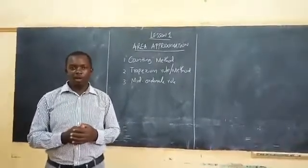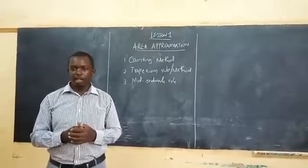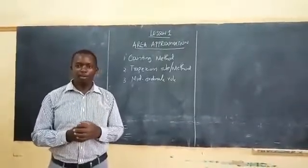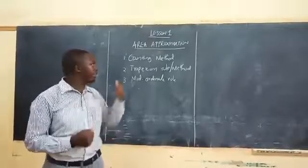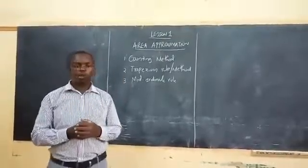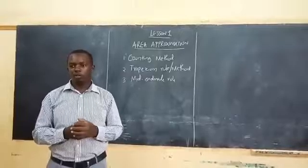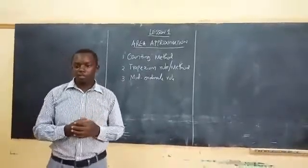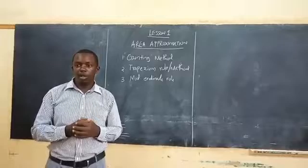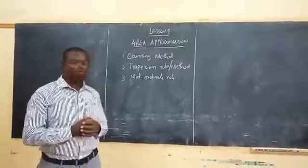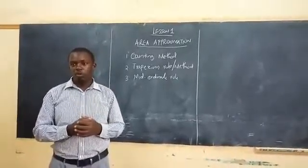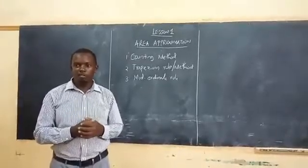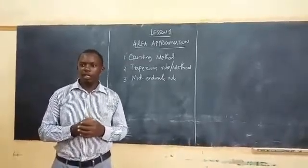Now we are going to learn about three techniques, but for this lesson we are going to do one. The first one, as you can see on the board, it is called counting method or counting technique. The second one is trapezium rule. The third one is mid-ordinate rule. So straight away we are going to start with the counting method or counting technique.